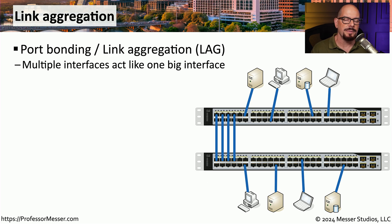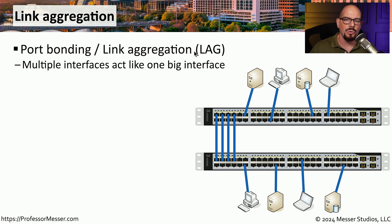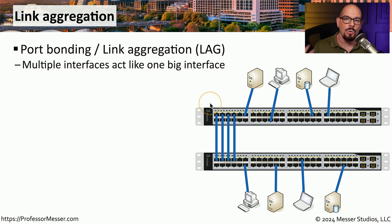Another useful configuration, especially between switches, would be one for link aggregation. This is sometimes referred to as port bonding, or you might see it abbreviated as LAG for link aggregation. This means we are connecting multiple interfaces together on two devices, which normally we would not want to do because we would be creating a loop. But if you've configured all of those interfaces as link aggregation, the switch will interpret them as one very large connection rather than four individual connections. So if all four were gigabit ethernet connections, you would configure those as LAG and now have four gigabits of throughput between those two devices.